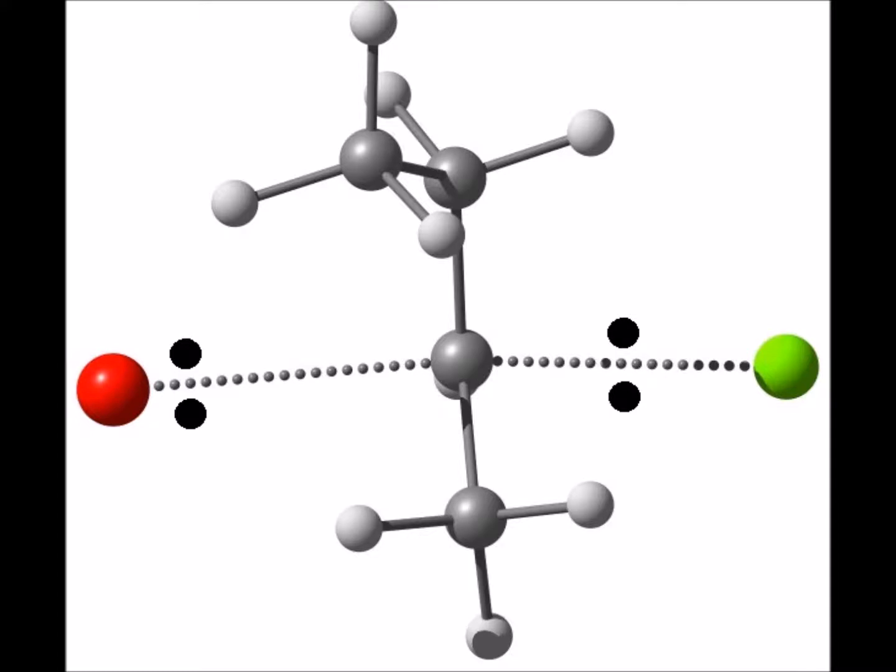This is the computed transition state structure to which we have added, on the left, the two Lewis dots for the lone pair on the incoming nucleophile, which we recall is a Lewis base. It is attacking the carbon, which is electron-deficient, which acts as a Lewis acid. And to the right, we see the bonding pair between the electron-deficient carbon and the soon-to-be-exiting leaving group chloride.